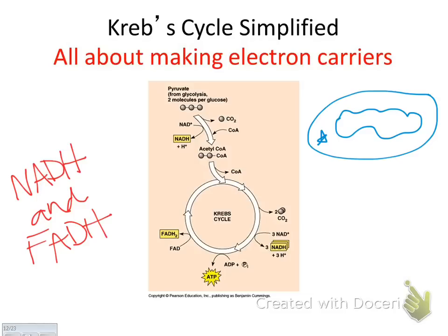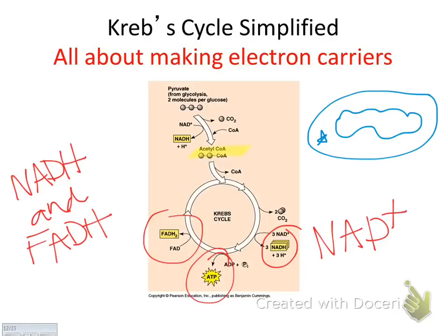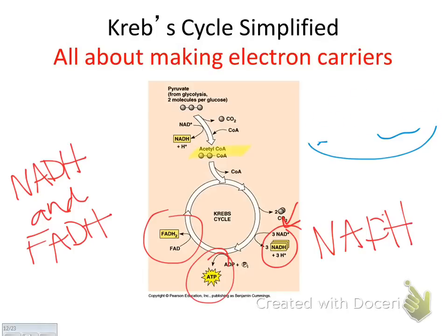Electron carriers are like school buses — they pick up the electrons. Each electron carrier can carry two electrons. The first negative electron cancels the positive charge of NAD+, and the second electron adds a hydrogen, since it's a hydrogen electron. So NAD+ becomes NADH. Write that in: NAD+ makes NADH. Similarly, a positive hydrogen can attach to FAD to make FADH2.